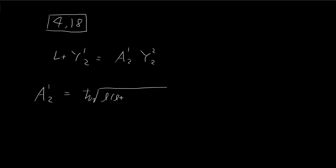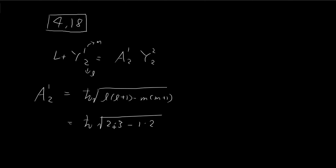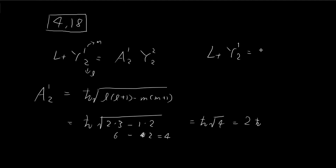The formula is: the square root of l times (l+1) minus m times (m+1). In this case, m is equal to 1 and l is equal to 2. So the value of a12 is equal to ℏ multiplied by the square root of (2×3 − 1×2), which is 6 minus 2, equal to 4. So we have ℏ times the square root of 4, which is just 2ℏ. From this result, applying the erasing operator to y12 gives 2ℏ multiplied by y22.